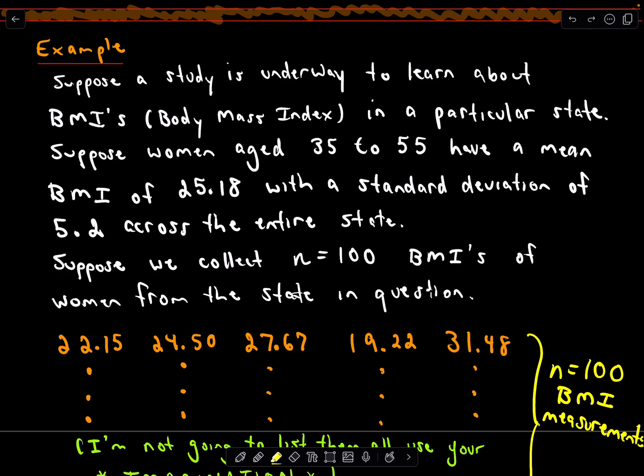Suppose a study is underway to learn about BMI, which is the body mass index, in a particular state. We're looking at women aged 35 to 55. Suppose that previously they had a mean BMI of 25.18 with a known standard deviation of 5.2 across that state. That's the information that we had previously.